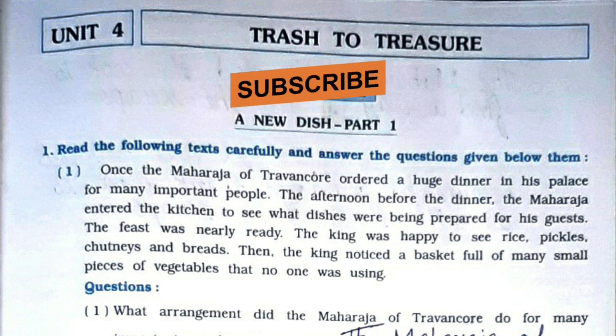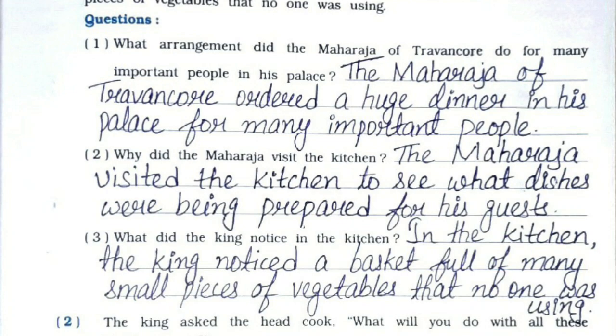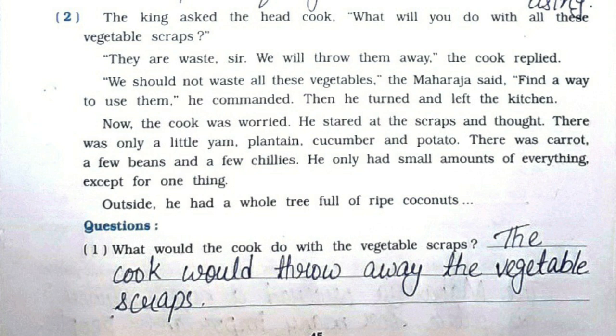We'll be starting with the question answers. First one: What arrangement did the Maharaja of Travancore do for many important people in his palace? The Maharaja of Travancore ordered a huge dinner in his palace for many important people. Second: Why did the Maharaja visit the kitchen? The Maharaja visited the kitchen to see what dishes were being prepared for his guests. Third: What did the king notice in the kitchen? In the kitchen, the king noticed a basket full of many small pieces of vegetables that no one was using.